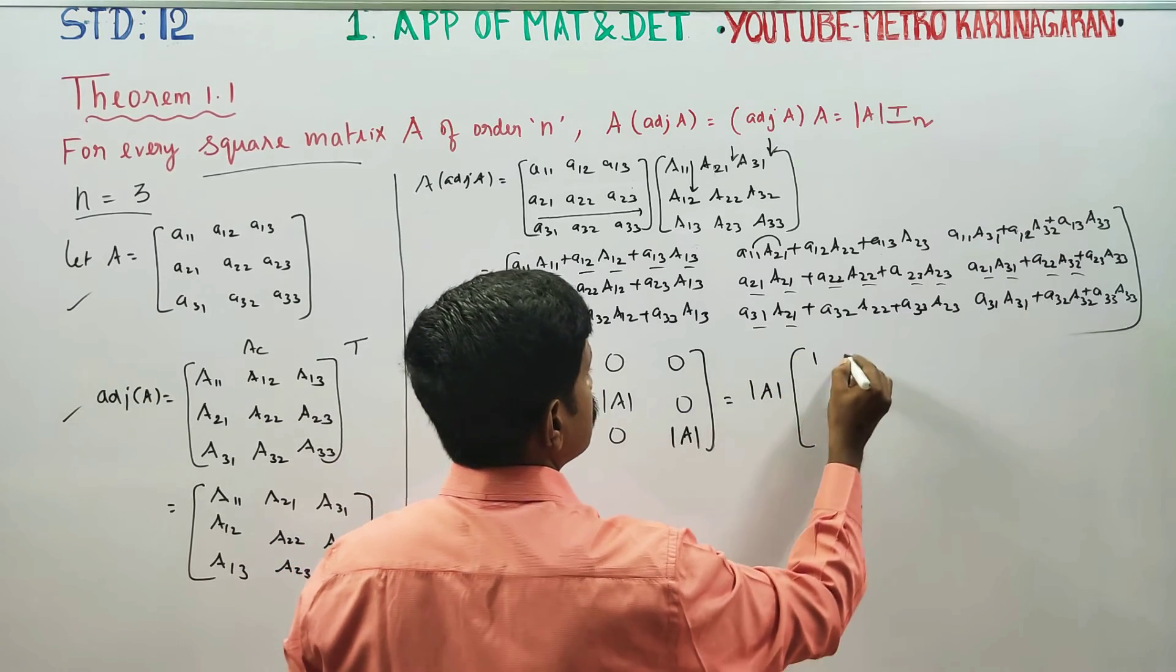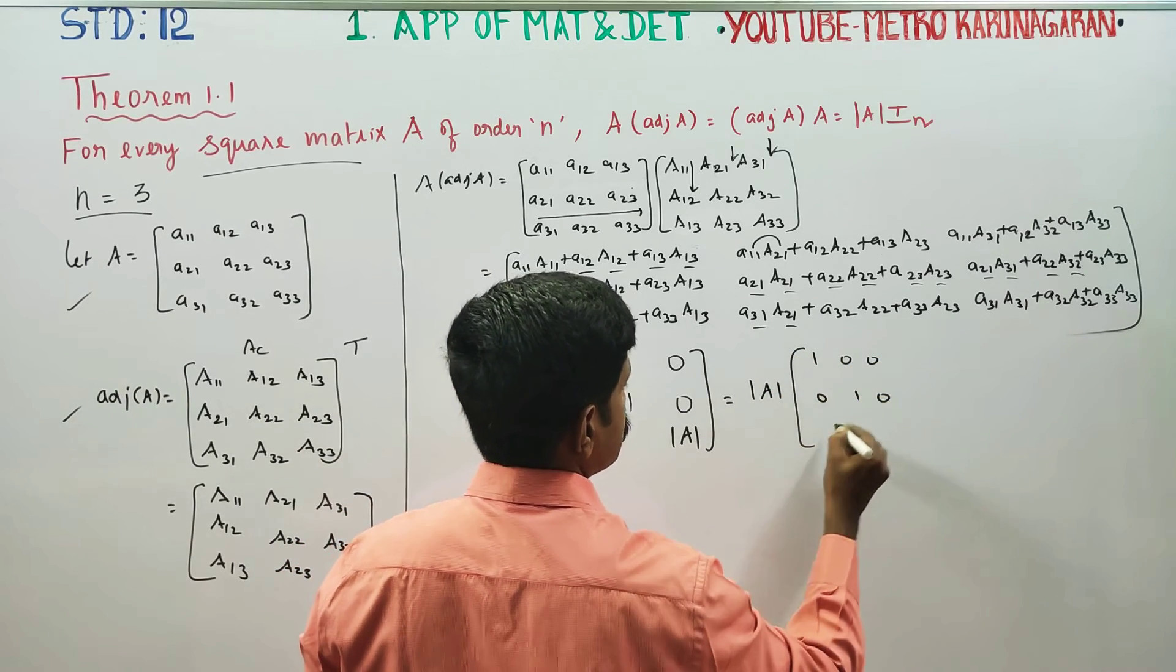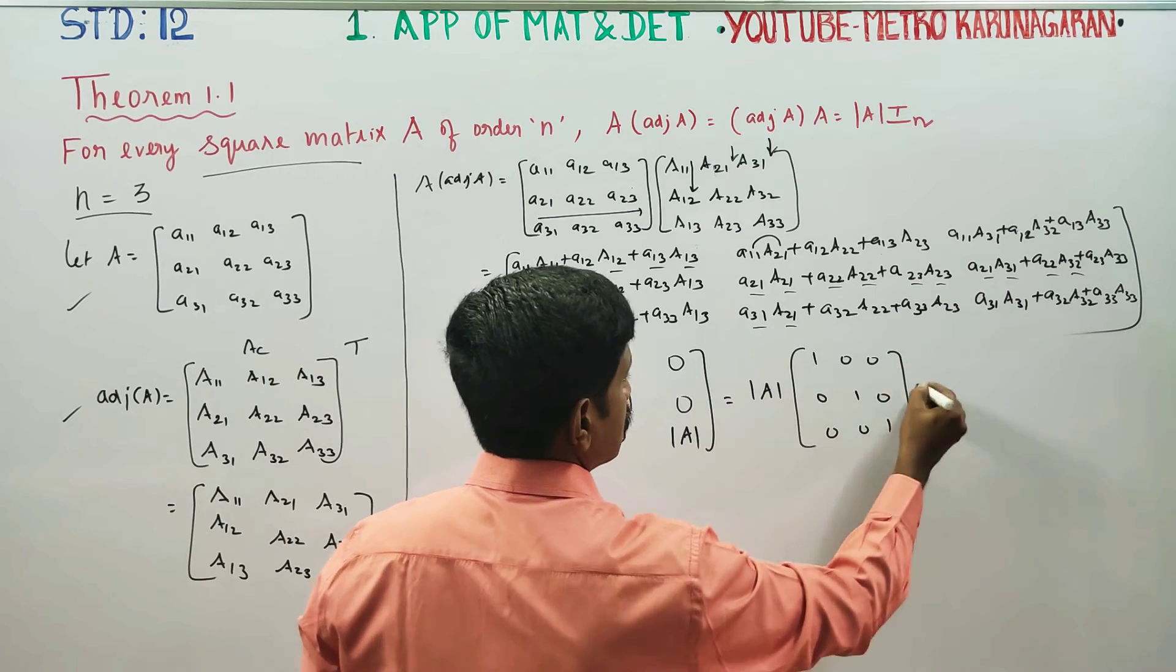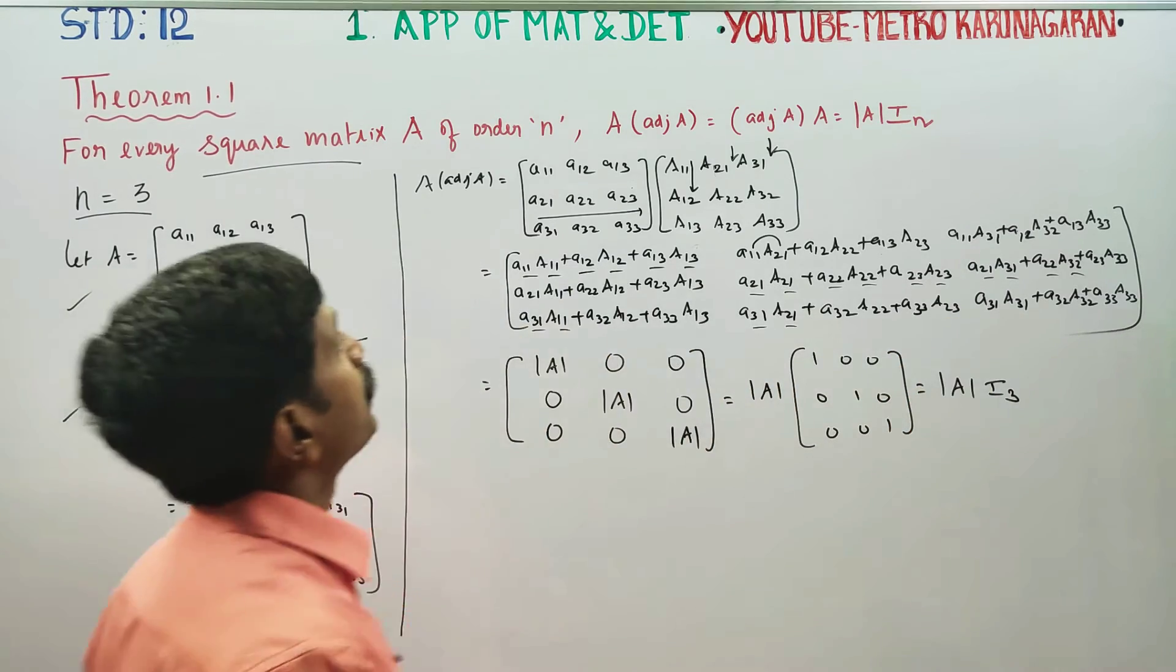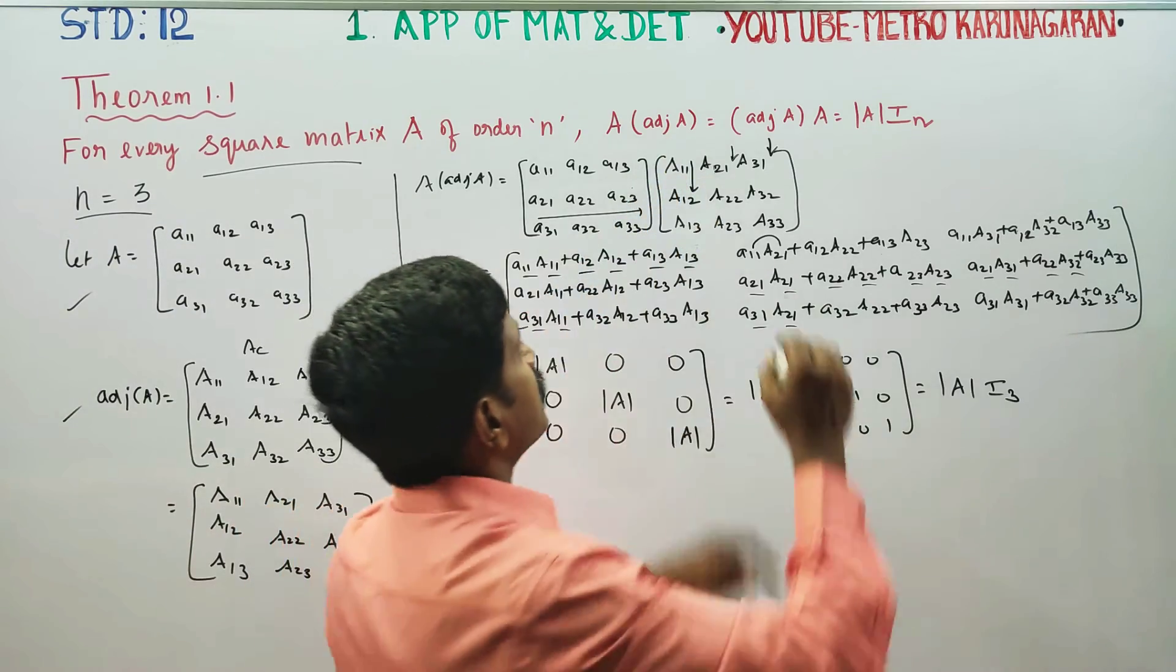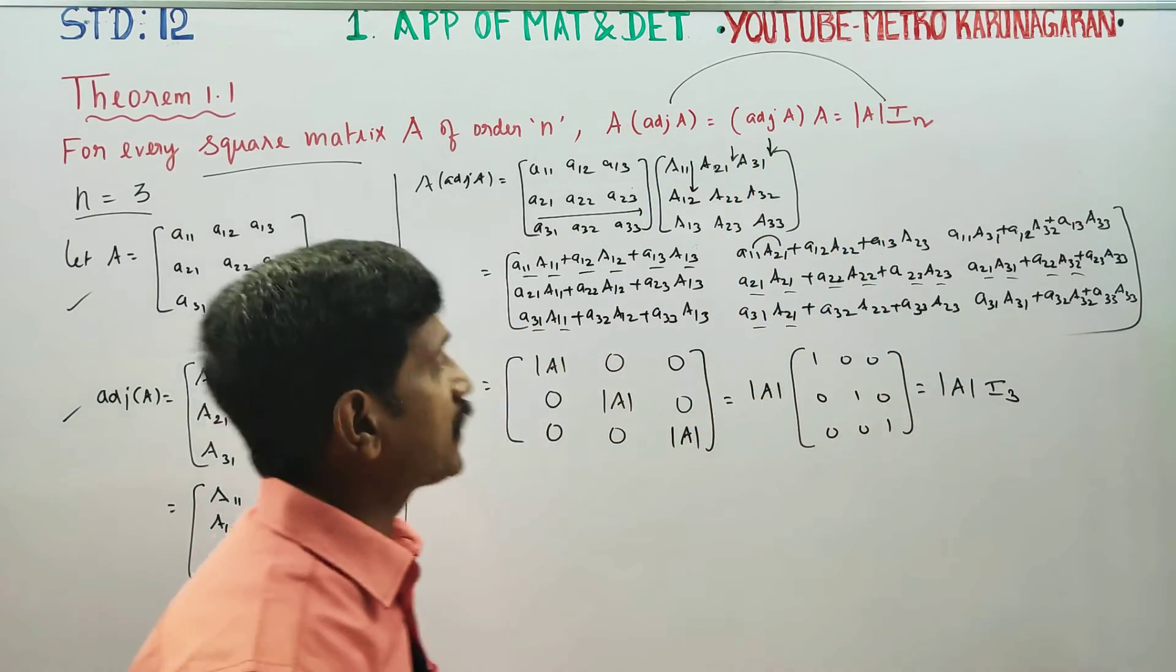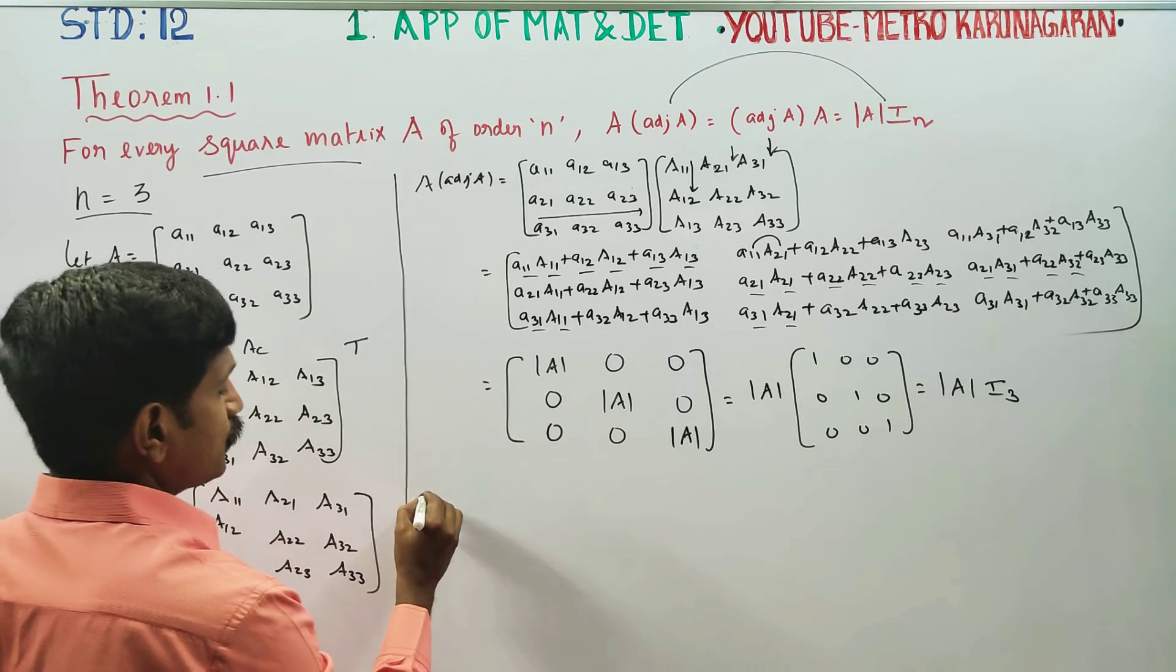You will be getting the identity matrix: 1, 0, 0, 0, 1, 0, 0, 0, 1. This is determinant A into I3. So we proved that A into adjoint A equals determinant A into I3.